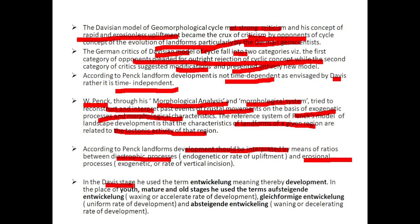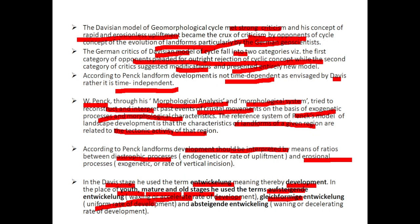In place of Davis's stages, Penck used the term Entwicklung in place of 'development,' and in place of youth, mature, and old stage, he used the terms: Aufsteigende Entwicklung, meaning waxing or accelerated rate of development; Gleichförmige Entwicklung, meaning uniform rate of development; and Absteigende Entwicklung, meaning waning or decelerating rate of development.